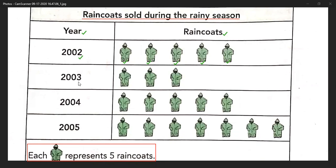In the year 2003, counting: 5, 10, 15 — so 15 raincoats were sold. In the year 2004, counting: 5, 10, 15, 20, 25 — so in the year 2004, 25 raincoats were sold.